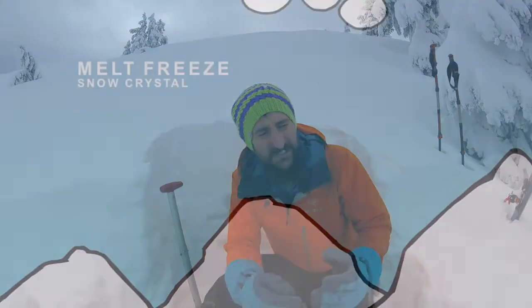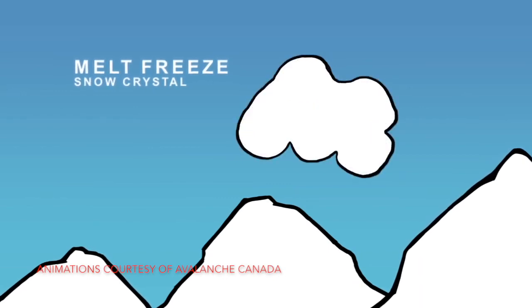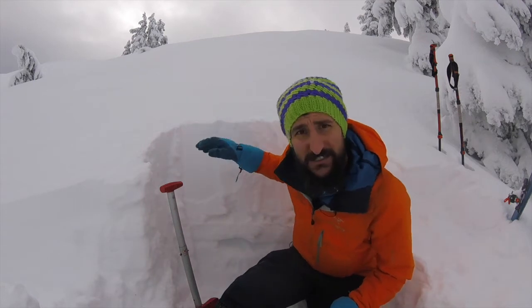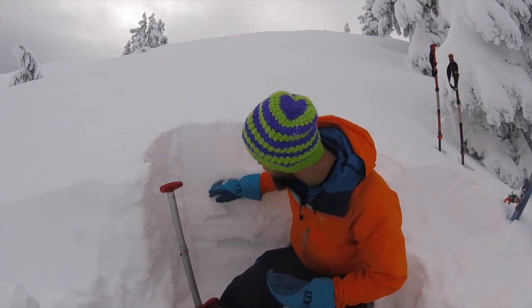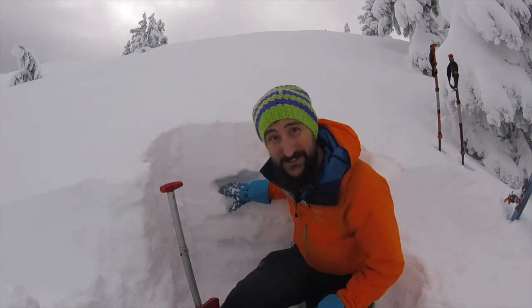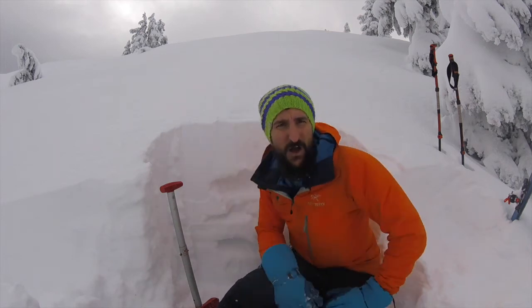The final type of metamorphosis is a melt-freeze crust, which is fairly simple. The upper snowpack melts due to strong sun, warm air temperature, or rain, and then it freezes again creating a crust. That's not a problem when it's on the surface, but when that crust gets buried — like right here — it can act as a bed surface the next time a significant amount of new snow accumulates on top of it.